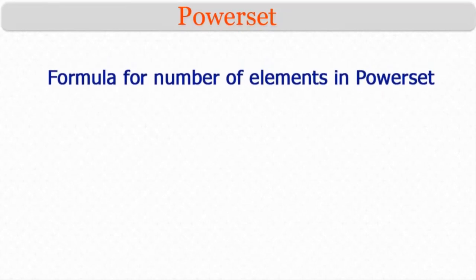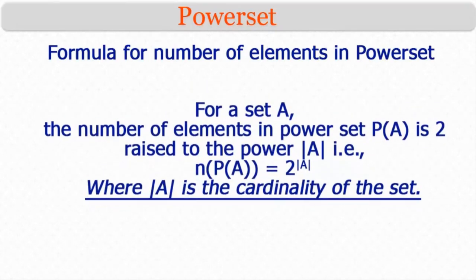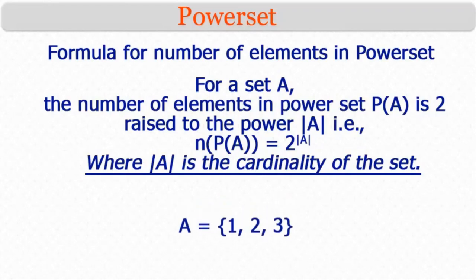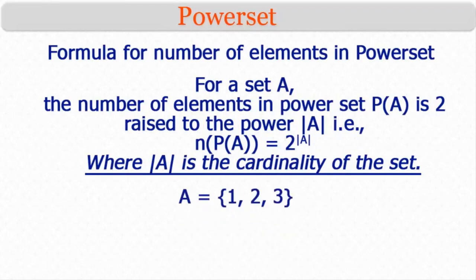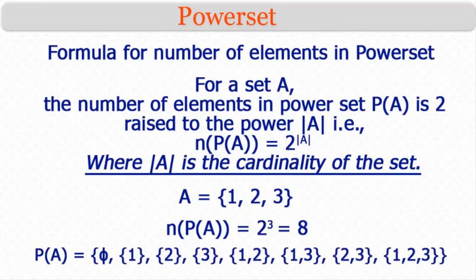There is a formula to find the number of elements in a power set. For a set A, the number of elements in the power set P(A) is 2 raised to the power of |A|, where |A| is the cardinality of the set. So for A = {1, 2, 3}, the number of subsets is 2³ = 8. Don't forget to put subsets in curly braces.